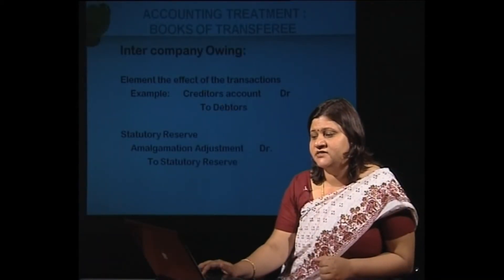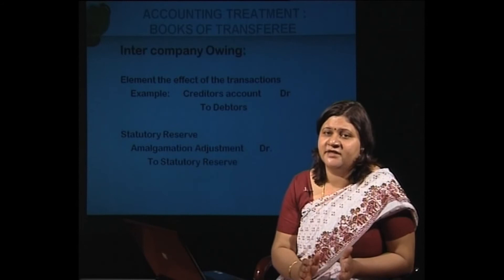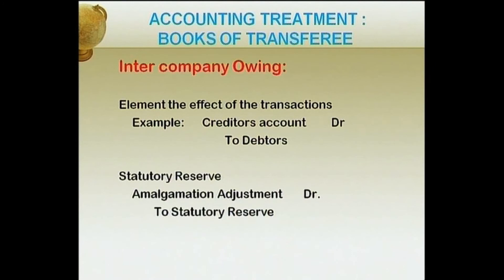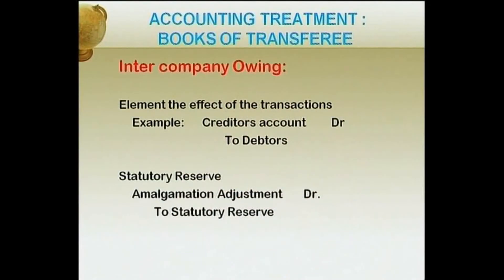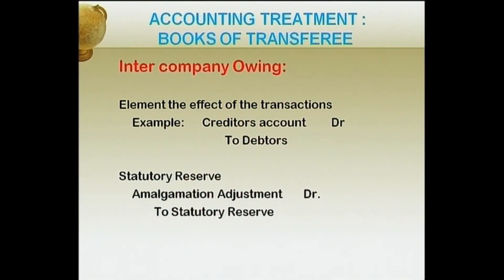Inter-company owing refers to amounts reflected under both balance sheets — some debtors of one company are creditors of the other. A mutual adjustment entry is passed to eliminate this: Creditors Account debit, to Debtors — both are eliminated for the same amount. For statutory reserves, the entry is: Amalgamation Adjustment Account debit, to Statutory Reserves, to maintain the statutory reserve of the transferor company.